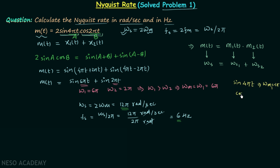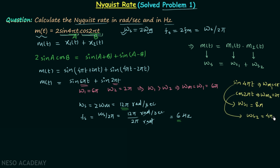For cos(2πt), ωm2 = 2π, so ωs2 = 2×2π = 4π radians per second. Adding them: ωs = ωs1 + ωs2 = 8π + 4π = 12π radians per second, which matches our earlier result. Using this property gives the same answer much more quickly.